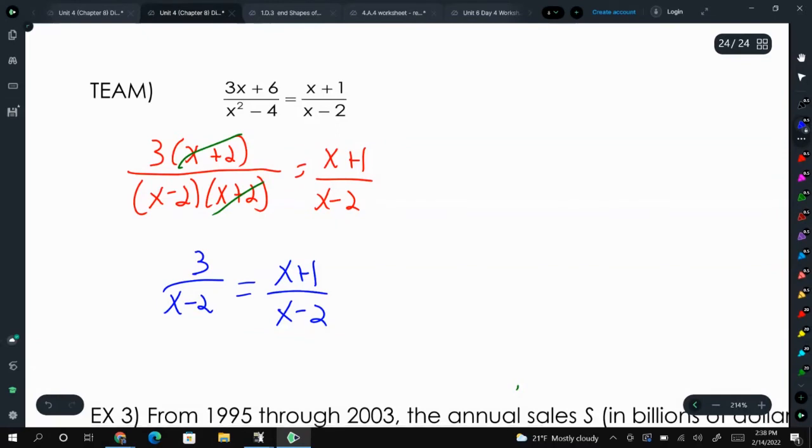So what we're left with is 3 over x minus 2 equals x plus 1 over x minus 2. This leads me to another kind of shortcut, where since the denominators are both the same, we can ignore them. We don't have to cross multiply. It'd be like the same thing as multiplying x minus 2 on both sides. If we multiply both sides by x minus 2, these two would cancel and these two would cancel. And then we are left with 3 equals x plus 1. Then we would subtract 1 from both sides, and we get 2 is equal to x.